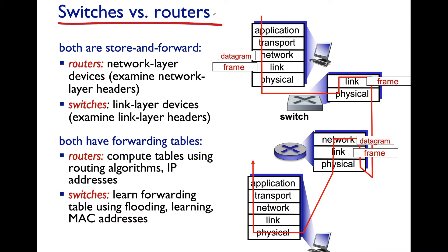Let's compare switches and routers. Both store and forward packets. A router examines network layer header information — it is a network layer device that stores and forwards datagrams. Switches are link layer devices — layer two — they examine link layer headers. Routers compute forwarding tables via routing algorithms like link state or distance vector, using IP addresses. Switches learn their forwarding tables via flooding and self-learning, using MAC addresses as keys. They are similar but not the same — they use different header information and correspond to different layers in the five-layer internet stack.